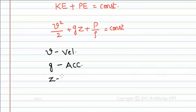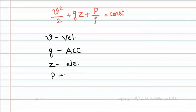z is the elevation of the point with reference to the reference plane, and p is the pressure at the chosen point. Rho is the density of the liquid. Now in the given problem...